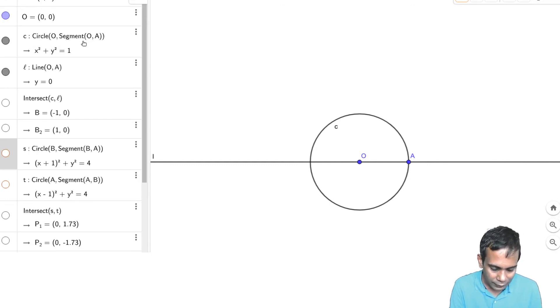And now we can try to find the intersection of the circle C with the line L. Okay, there are two points in the intersection: this point B and the other point is A. So GeoGebra gives me both the points. I will not display this other point B2 which is also the same as A.